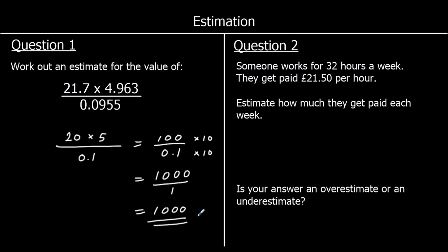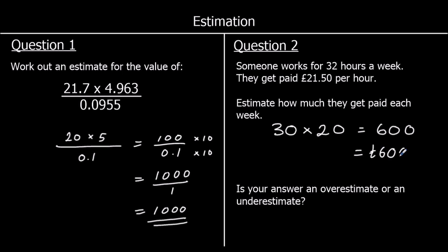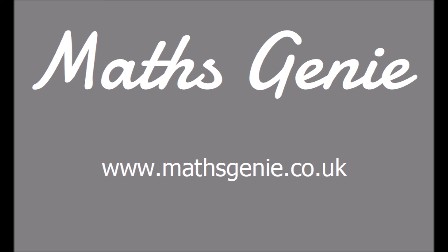Question 2: someone works 32 hours a week and gets paid £21.50 per hour. Estimate their weekly pay. To one significant figure: 32 rounds to 30 hours, and £21.50 rounds to £20 per hour. So 30 × 20 = £600. Is this an overestimate or underestimate? We rounded both numbers down, so the actual answer will be higher — this is an underestimate.